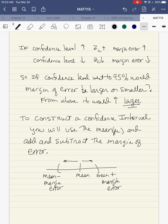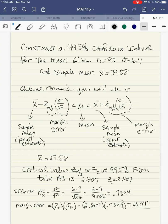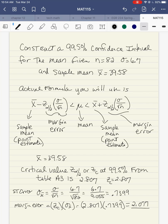Now we're going to construct the actual confidence interval. You will use the mean that's given and add and subtract the margin of error. So pretty much, if I thought of this as a number line, I would have the mean in the middle. I calculate the margin of error, and then I would subtract the margin of error and add the margin of error to the mean, and I create an interval. So this particular problem says to construct a 99.5% confidence interval for the mean, given n is equal to 82, sigma is equal to 6.7, and the sample mean is 39.58.